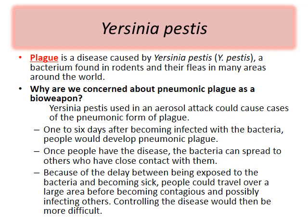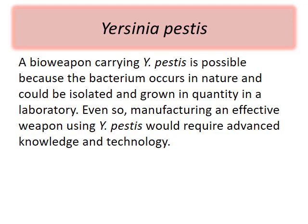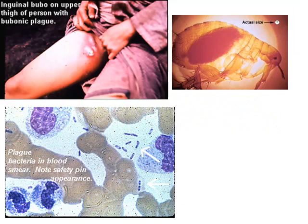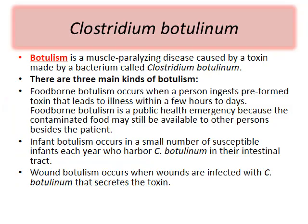The third important Category A bioterrorism threat is Yersinia pestis, the causative agent of plague. It is found in rodents and fleas in many areas. Pneumonic plague as a bioweapon is particularly concerning because within just a couple of days it can get out of hand. While inguinal bubo — bubonic plague — is rarely seen today, the classic textbook picture of a flea teeming with plague bacteria illustrates why it remains a threat.